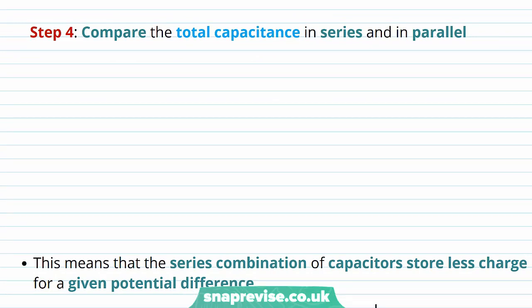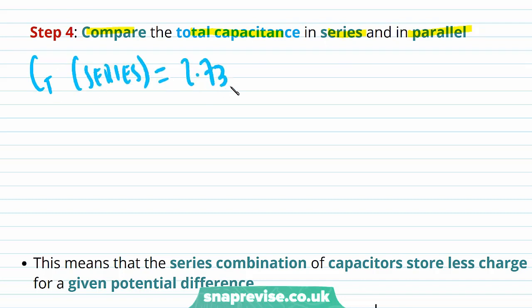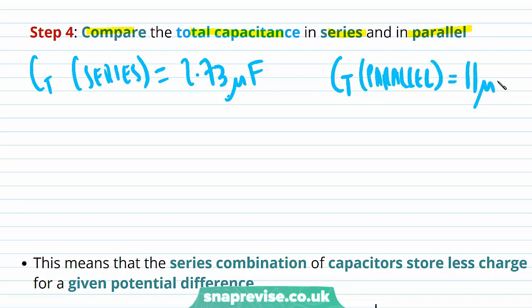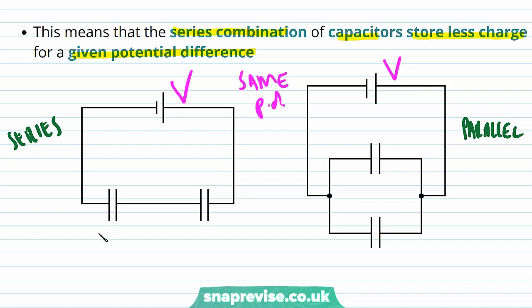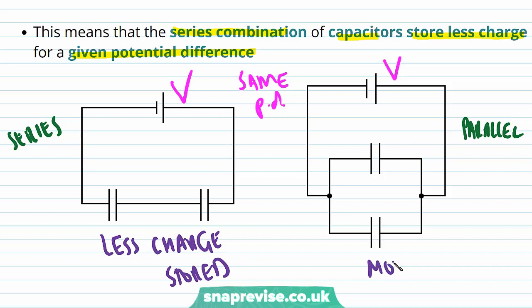Our fourth step is to compare the total capacitance in series and in parallel. The total capacitance in series is 2.73 µF and the total capacitance in parallel is 11 µF, and therefore the total capacitance in series is less than in parallel. What this means is that the series combination stores less charge for a given potential difference — if we put the same potential difference across both circuits, less charge will be stored in the series circuit than in the parallel circuit.